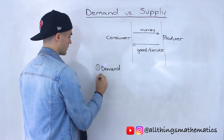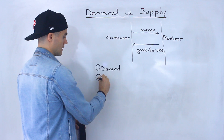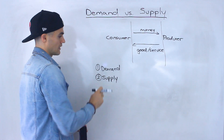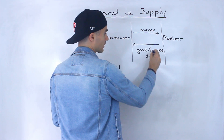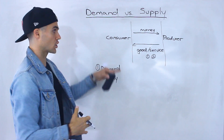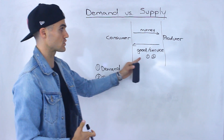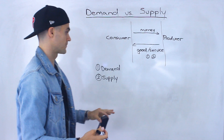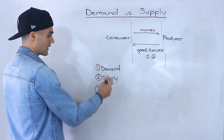Here's a breakdown of the upcoming section. We're going to look at demand separately, then we're going to look at supply separately. Demand and supply individually are going to fall around this good or service — basically, how much of a good or service a consumer is willing to consume, and how much of a good or service a producer is willing to produce.